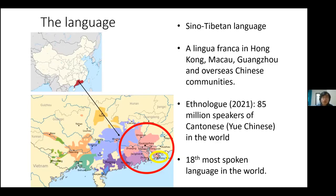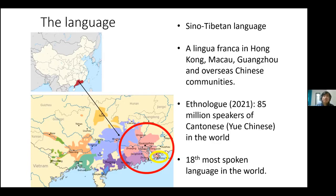You can see a yellow circle at the bottom part of the picture — that is Hong Kong, and most people in Hong Kong speak Cantonese as their mother tongue. According to Ethnologue 2021, there are 85 million speakers of Cantonese in the world, making it the 18th most spoken language. It is a lingua franca of Hong Kong, Macau, Guangdong province, and some overseas Chinese communities such as Vancouver, parts of Malaysia, and Singapore.